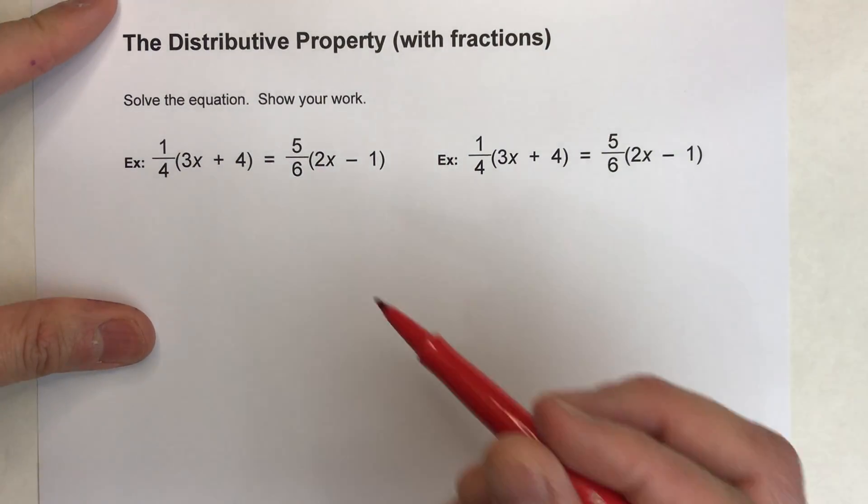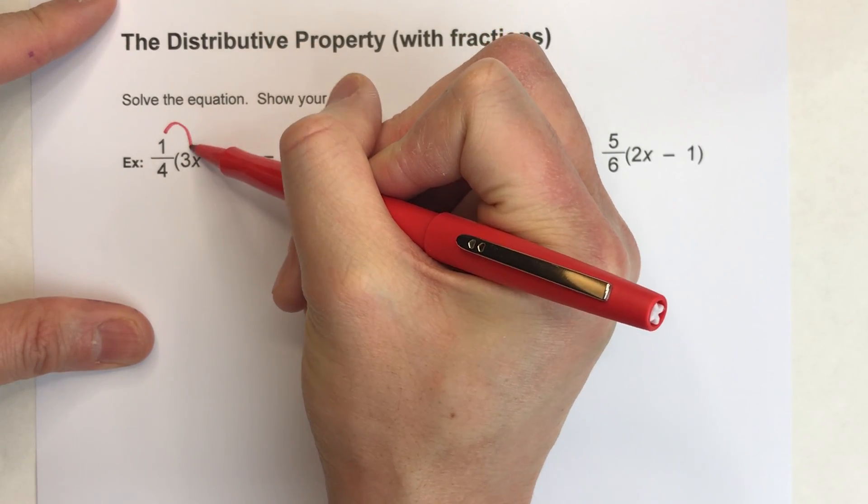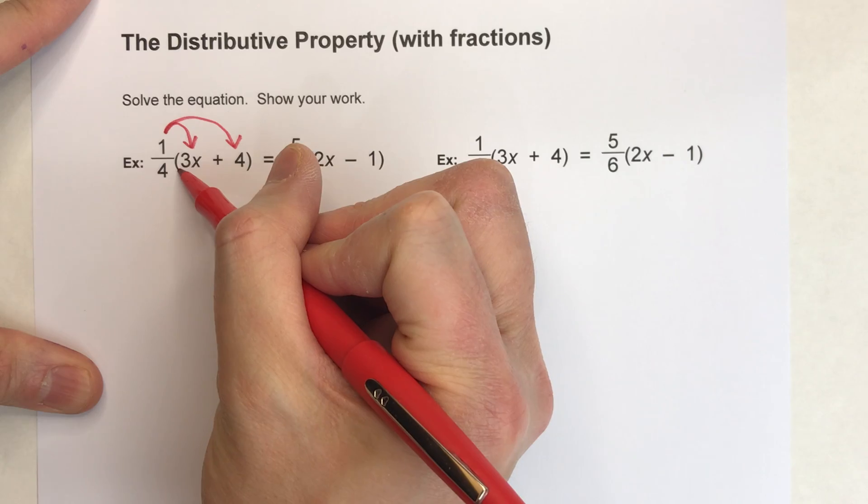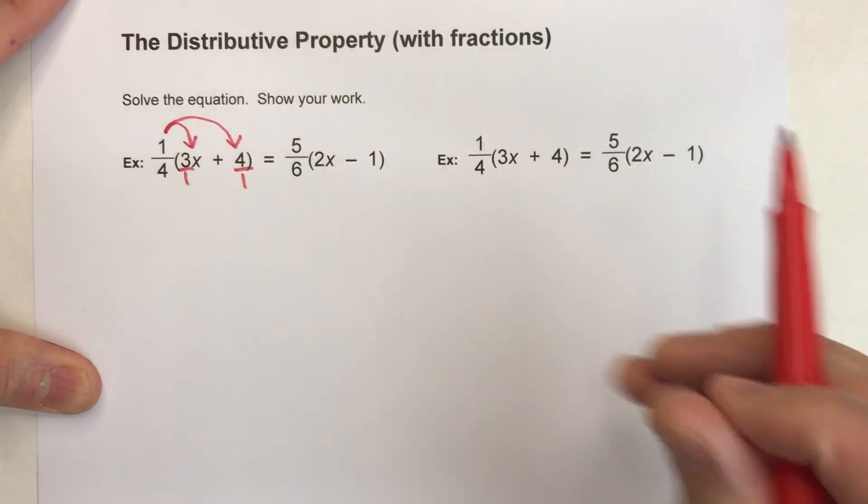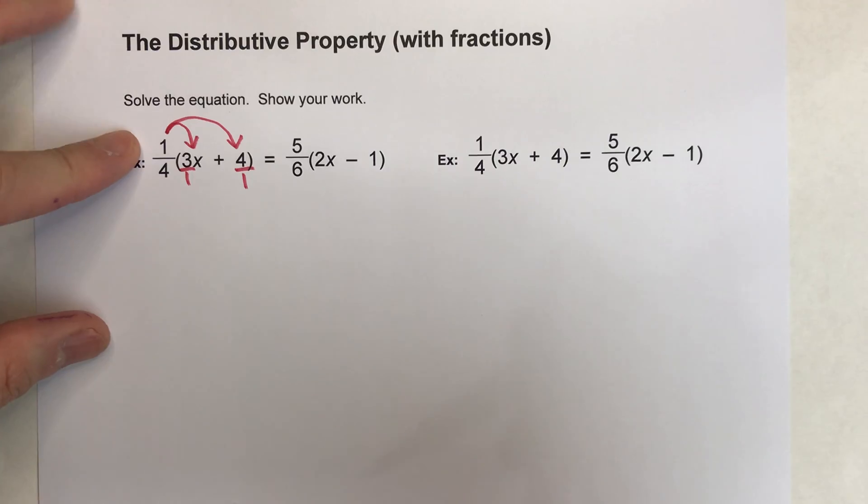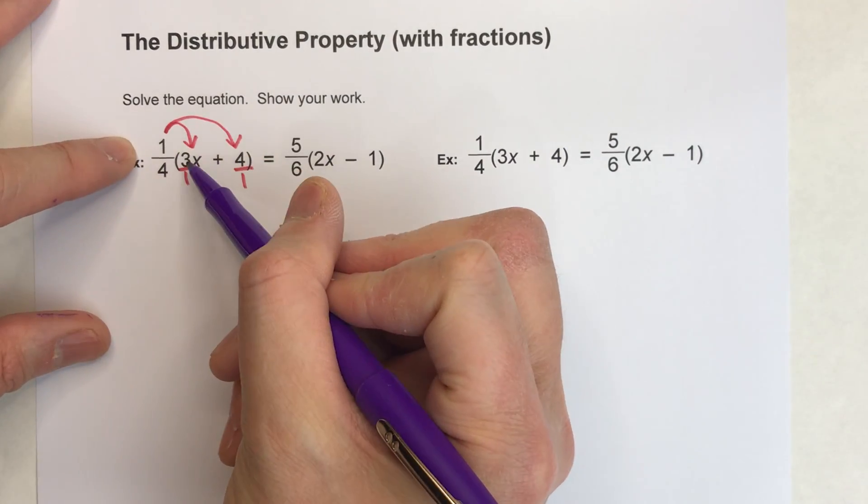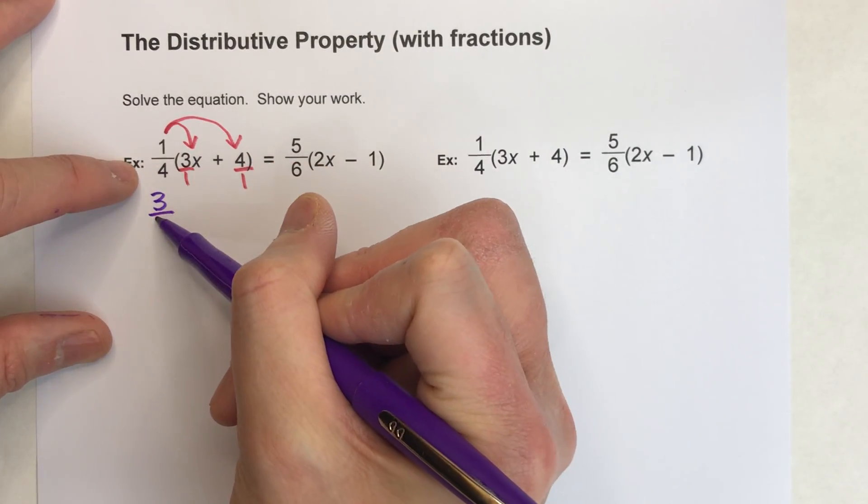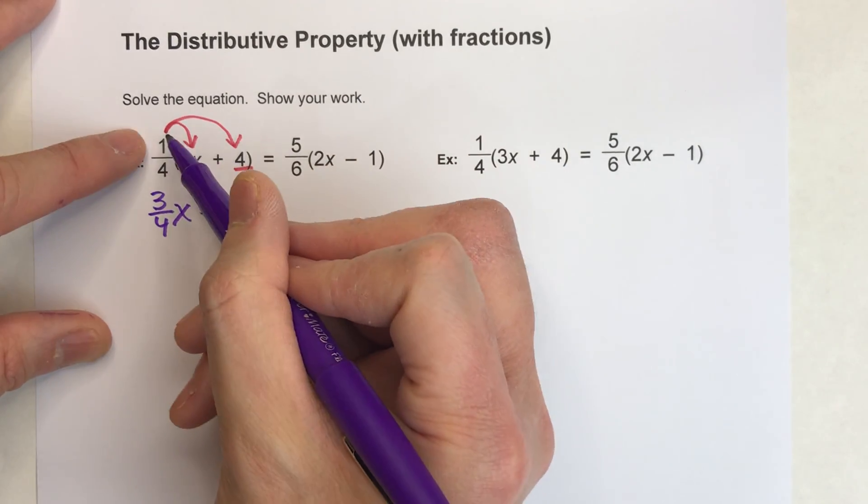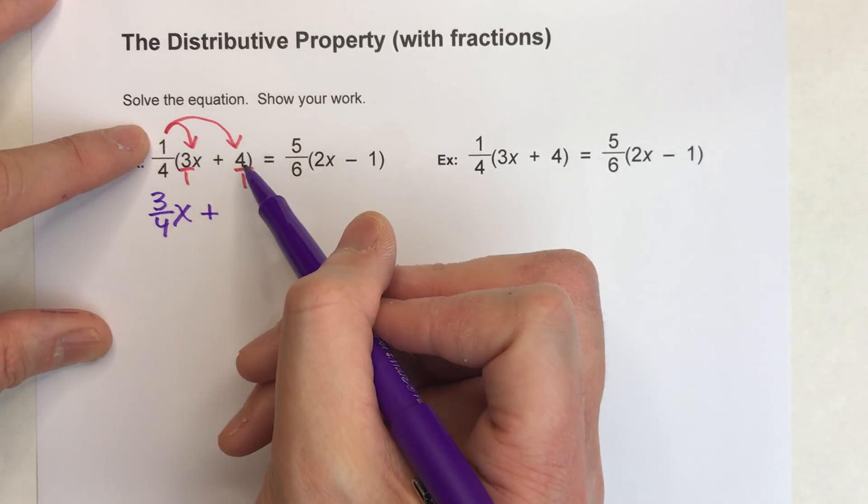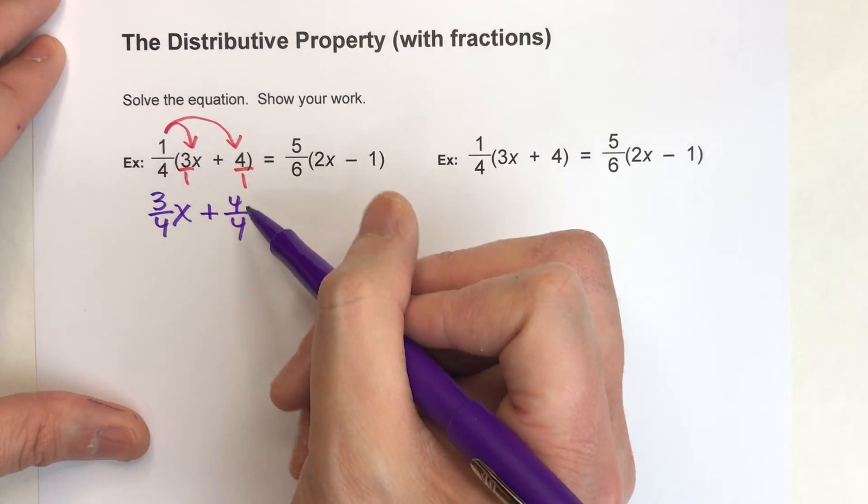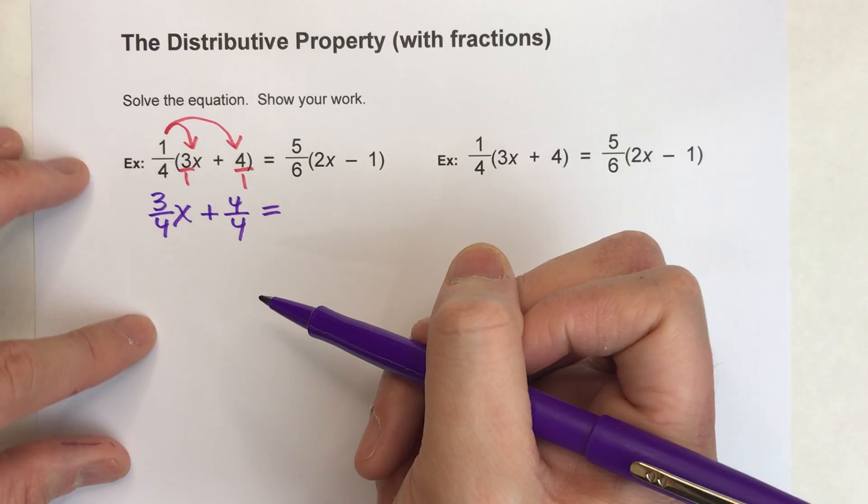So we know with the distributive property, we're going to multiply this 1/4 times every single item in the parentheses. And it might help to put this over 1 and this over 1, because when we multiply fractions, we have to do the top times the top and the bottom times the bottom. So 1 times 3 is 3, 4 times 1 is 4, so this is 3/4x, plus 1/4 times 4/1, which is 4/4, which is one whole, but let's keep it in that form for now.